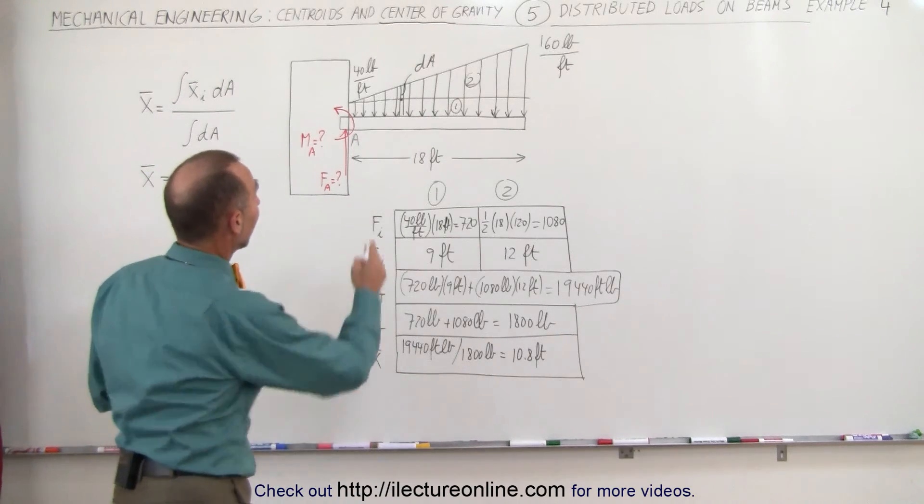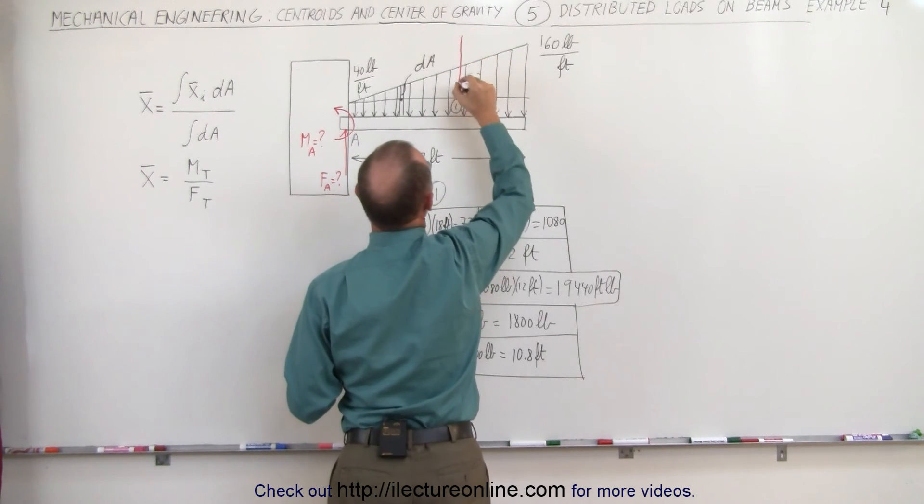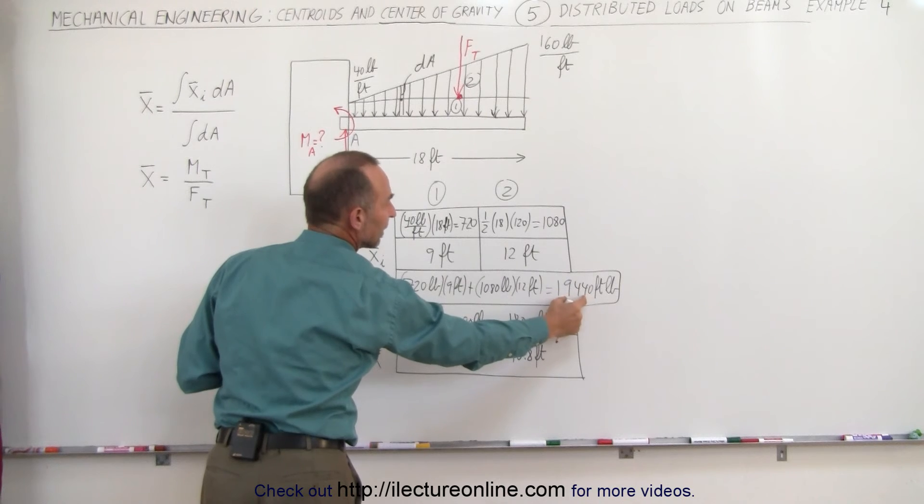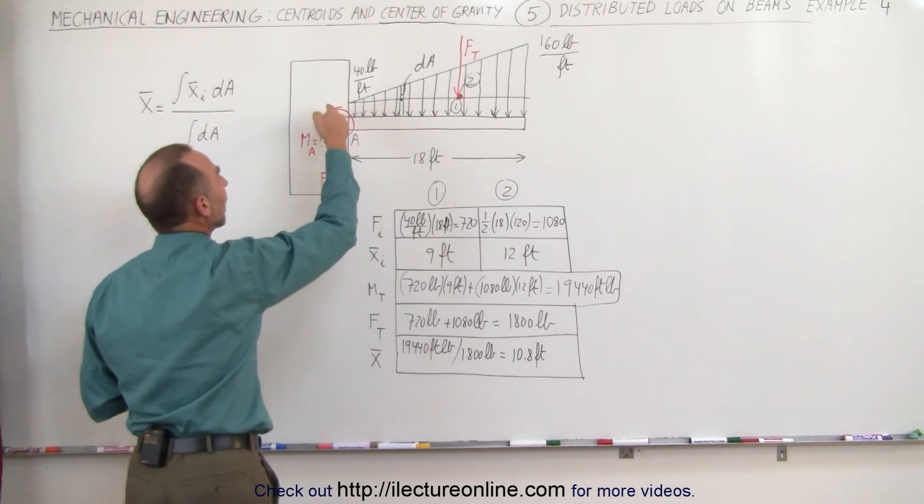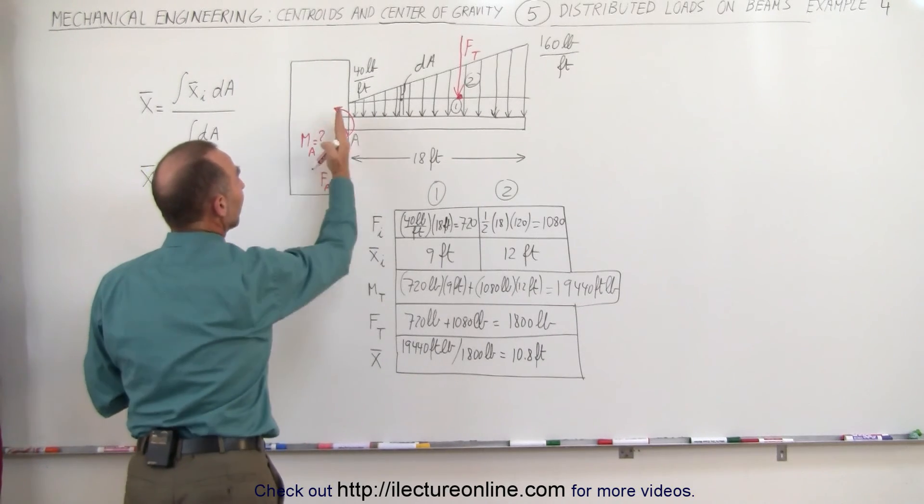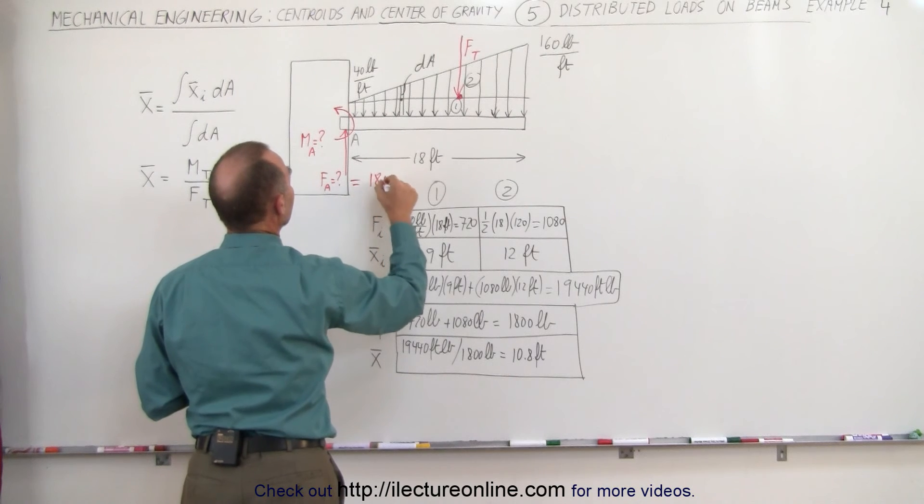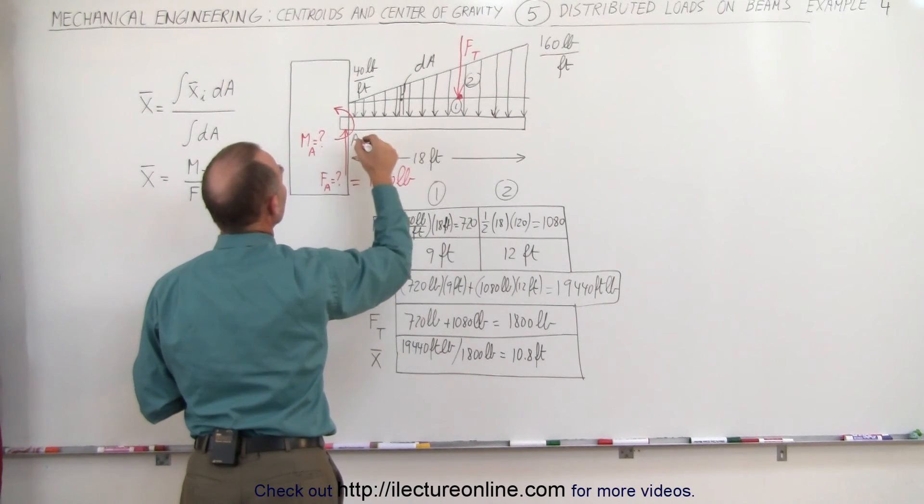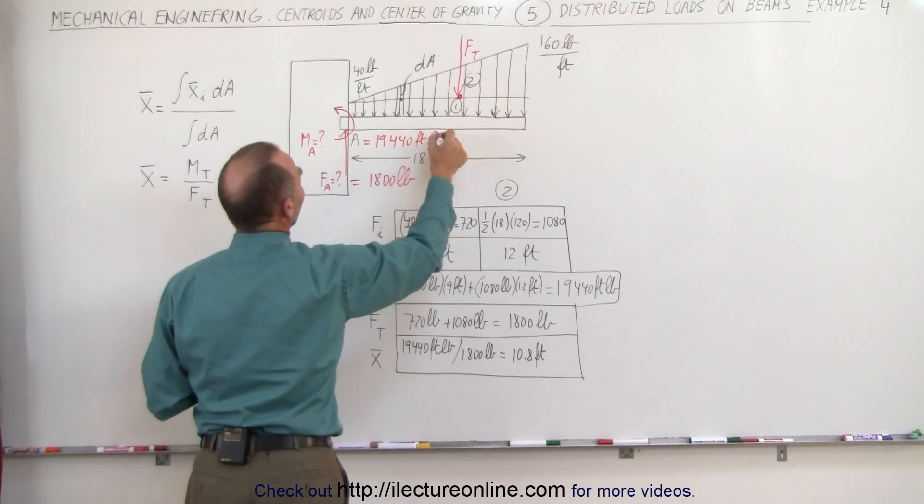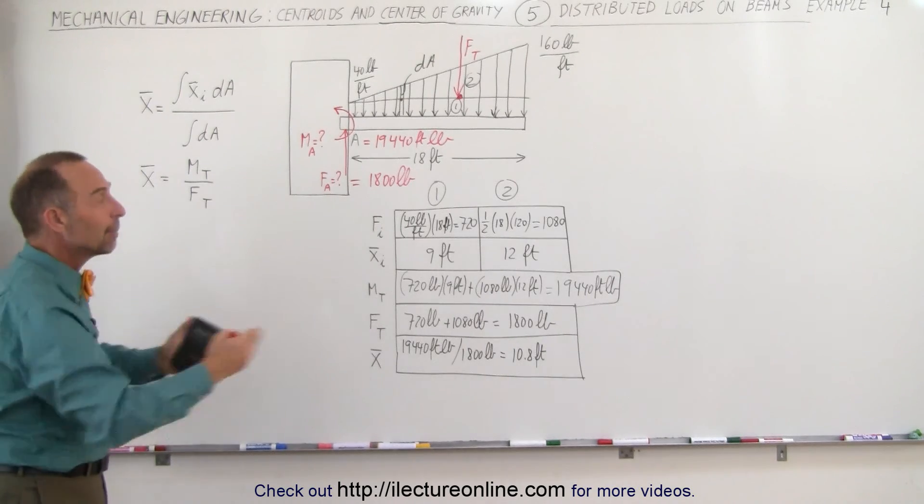Visually you can see that 10.8 feet places us right about here. Here's the centroid and the total force. Force total is acting through the centroid and causes a moment equal to 19,440 foot pounds, which is counterbalanced by the moment at A. The entire load is also carried by A. Therefore the force at A pushing upward equals the force total pushing downward, 1800 pounds acting in an upward direction. The moment here equals 19,440 foot pounds acting in a counterclockwise direction at A.